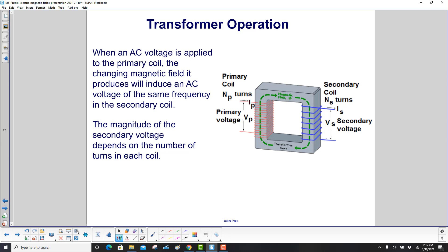When an AC voltage is applied to the primary coil, the changing magnetic field it produces will induce an AC voltage of the same frequency in the secondary coil. But the magnitude of the secondary voltage depends on the number of turns in each coil.